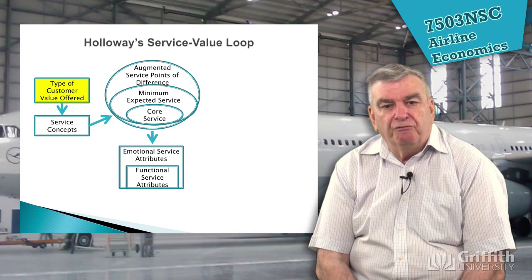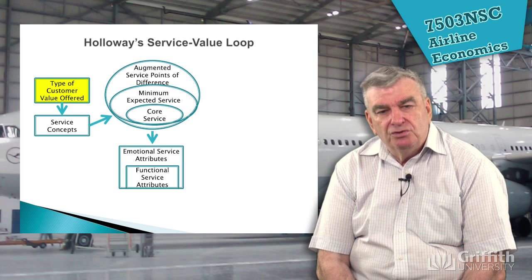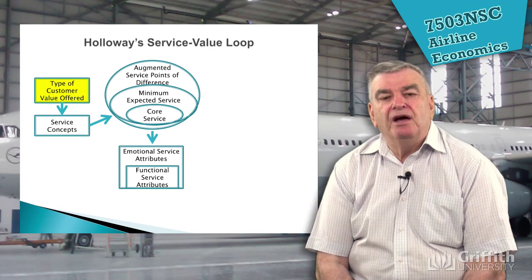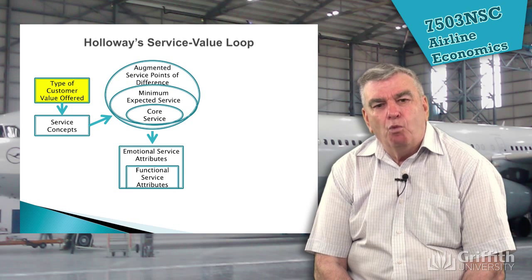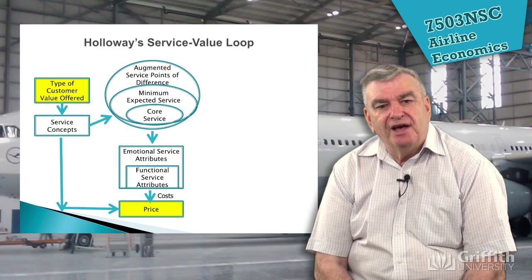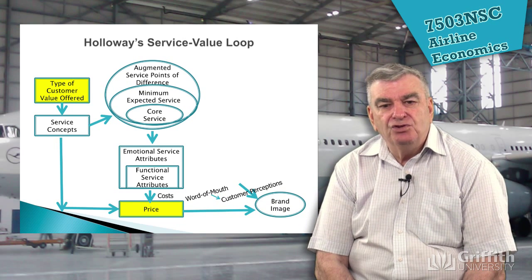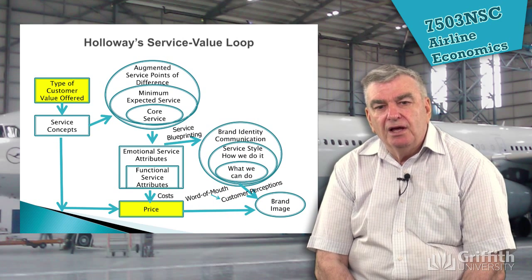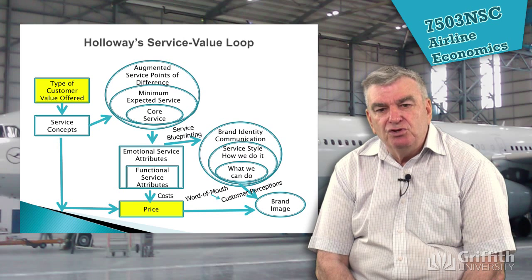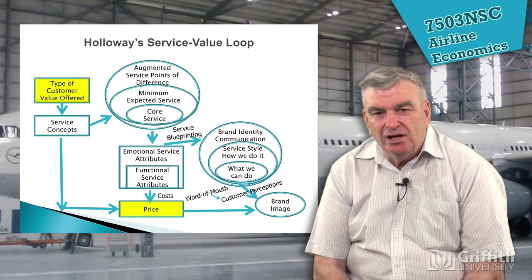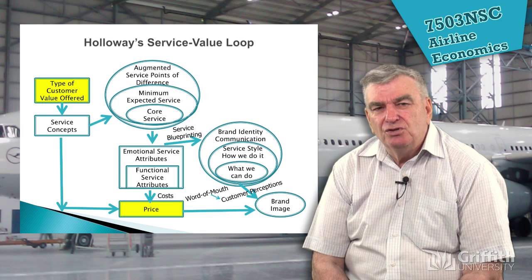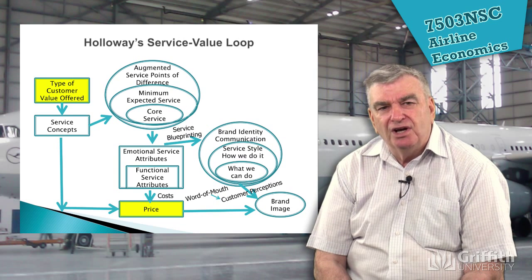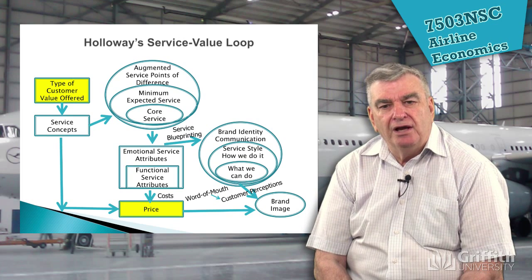Then you've got what we call the functional service attributes — the staff are there to greet you on board and meet your service throughout the flight. But also we have emotional service attributes — do the staff make you feel as though you're flying with a friendly airline that makes you feel welcome when you go on board? All of these have to be done to a certain price, and the one thing we find after that is this idea of brand image, which comes from service blueprinting. The airlines actually try to make sure they say to themselves: what is it that we can do, how are we going to go about doing it, and how do we communicate that?